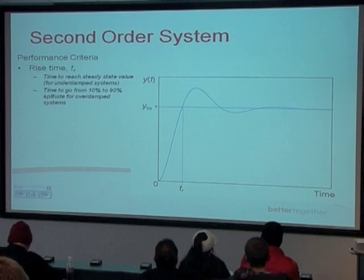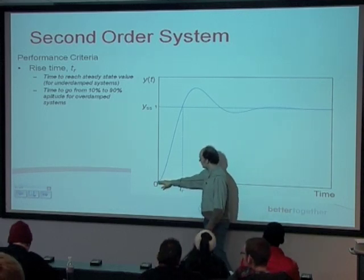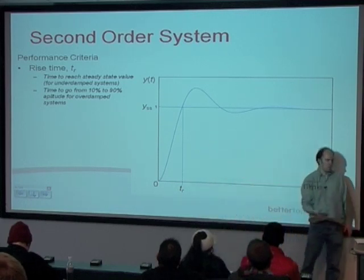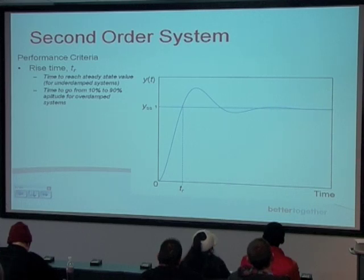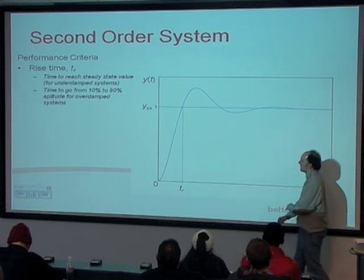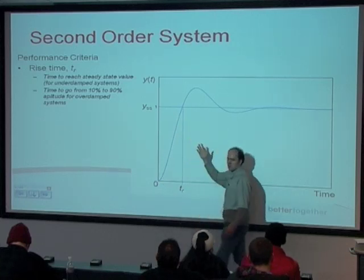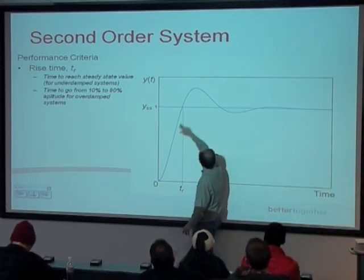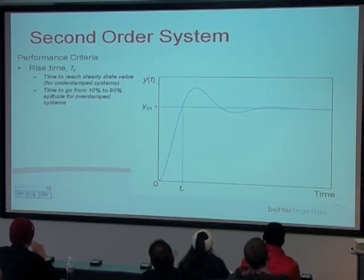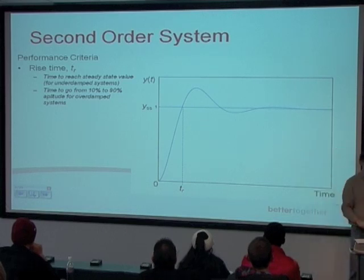The first performance criterion is the rise time T_R — the time it takes for the system to go from zero to the steady state value. If you overshoot, you're going to meet your steady state value during the rise. For an overdamped system, you almost never quite reach the steady state value because of the decaying exponential — you get closer and closer. So we determine the rise time for an overdamped system to be between 10% and 90% of the final value amplitude. For an underdamped system, the rise time is the time at which it first crosses over the steady state.